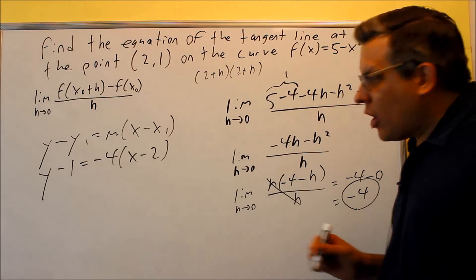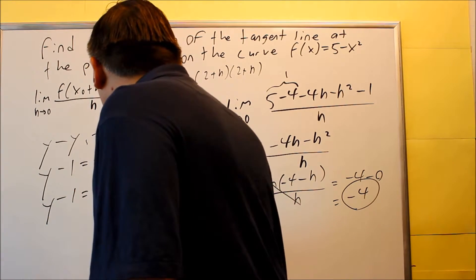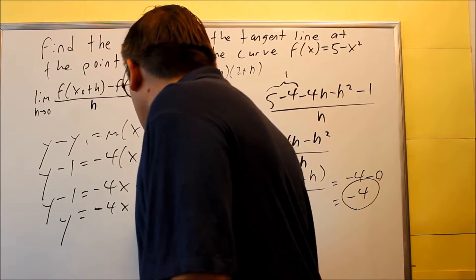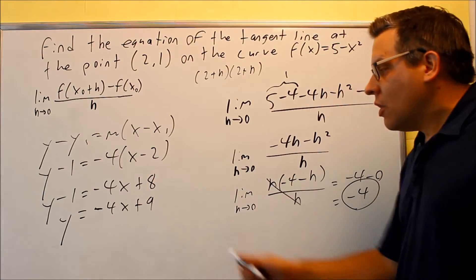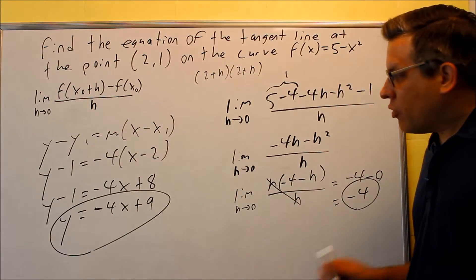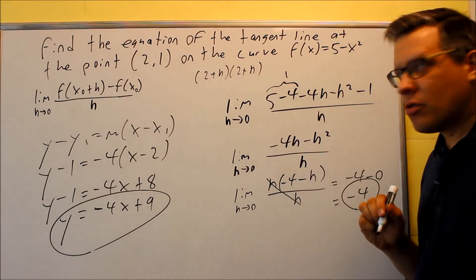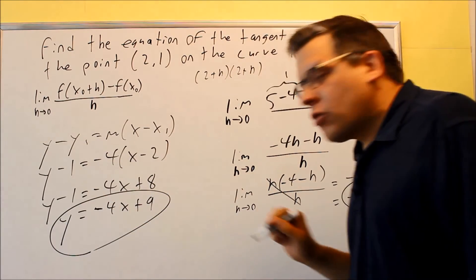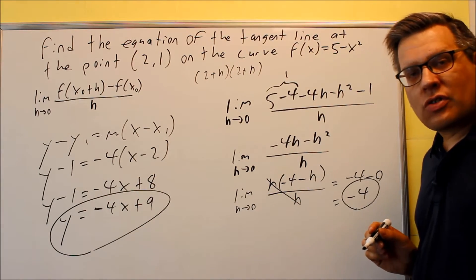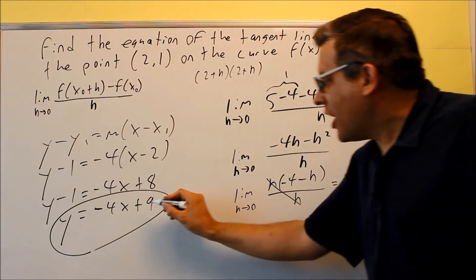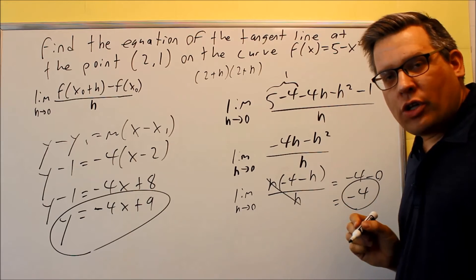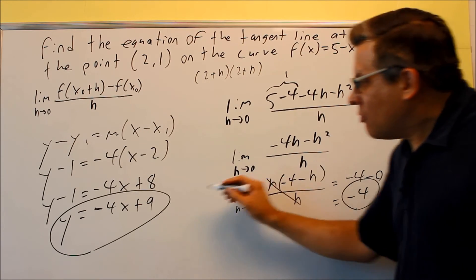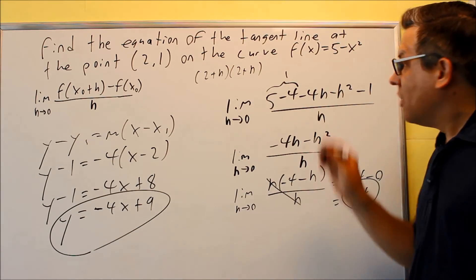From there we solve for y by distributing and adding 1 to both sides, giving us the final answer: y equals negative 4x plus 9. If you graph the original curve 5 minus x squared along with this line negative 4x plus 9 in a graphing calculator, you'll see that at the point (2, 1) the line crosses through and touches the graph at only one spot. That confirms the slope at that point is negative 4, and this is the tangent line.